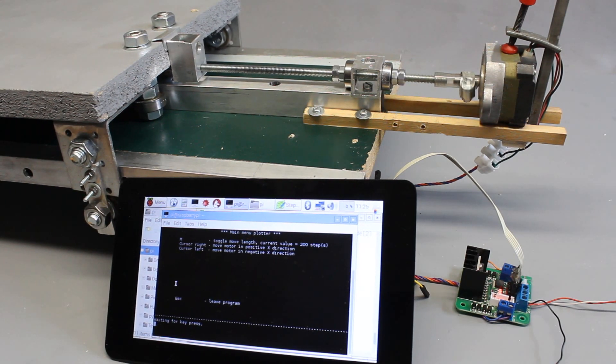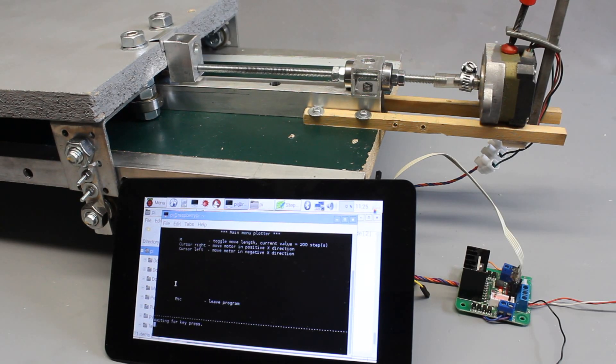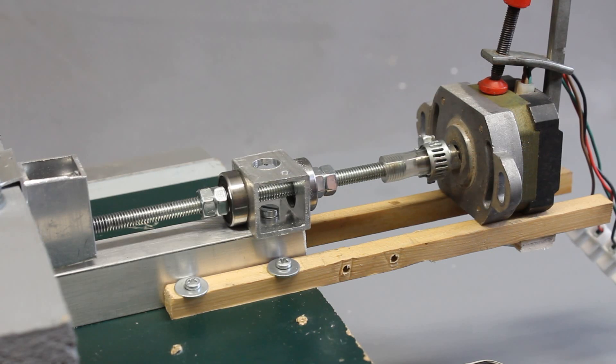When connecting a bipolar stepper motor to the threaded rod, the linear drive works even without sensor feedback. The motor is commanded by a Raspberry Pi.